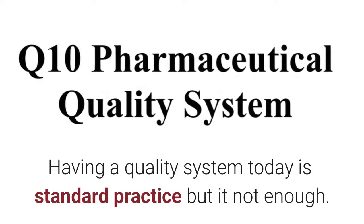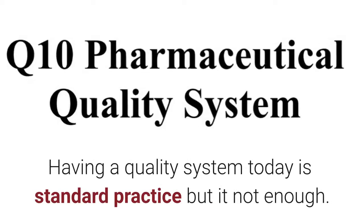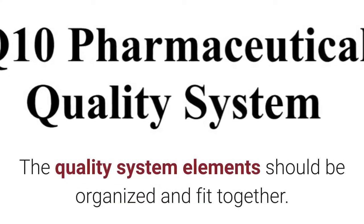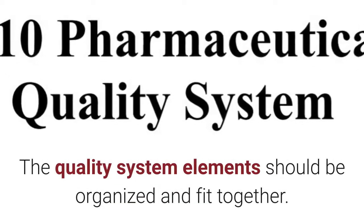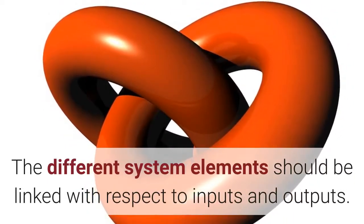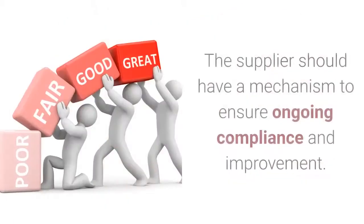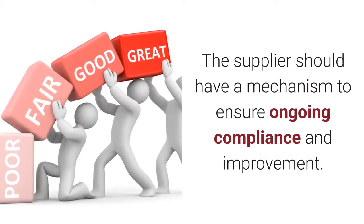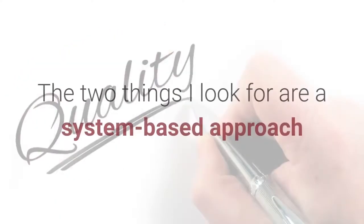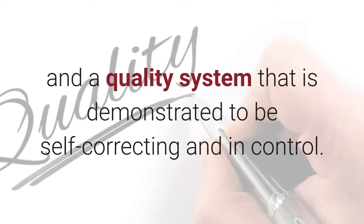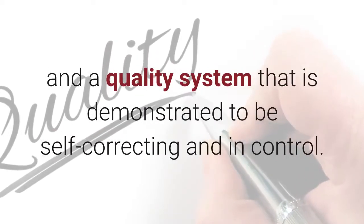Having a quality system today is standard practice, but it is not enough. The quality system elements should be organized and fit together. The different system elements should be linked with respect to inputs and outputs. The supplier should have a mechanism to ensure ongoing compliance and improvement. The two things I look for are a system-based approach and a quality system that is demonstrated to be self-correcting and in control.